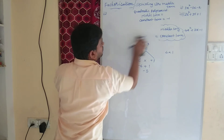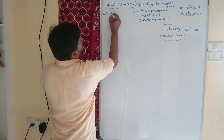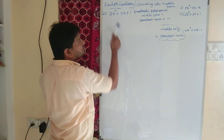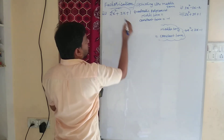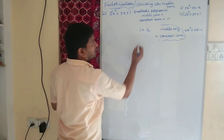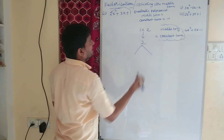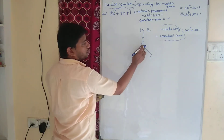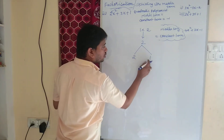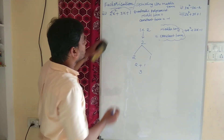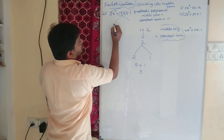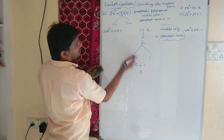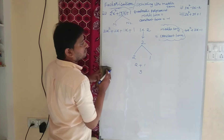Let us consider one more question: 2x square plus 3x plus 1. Again, here the coefficient of x square is 2 and the constant term is 1. We need to multiply: 1 into 2 equals 2. Now let us find the factors of 2. If I multiply 2 and 1 I get 2 — product condition satisfied. If I add 2 and 1 I get 3 — and our middle term is 3x. So n1 is 2 and n2 is 1.